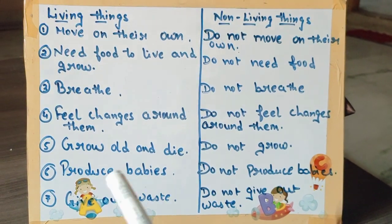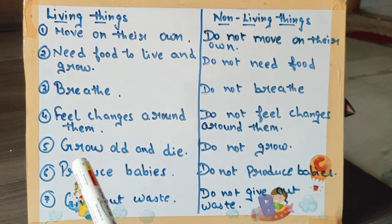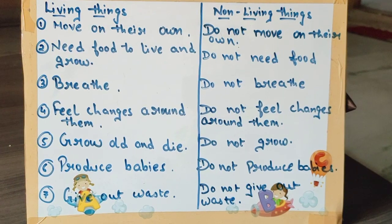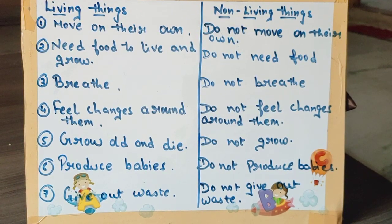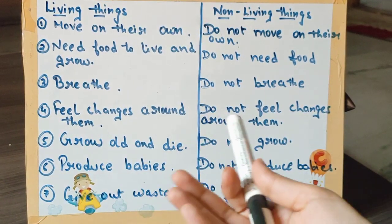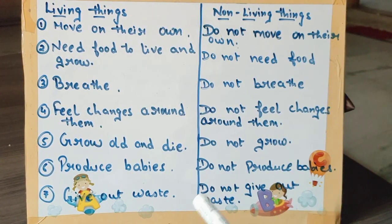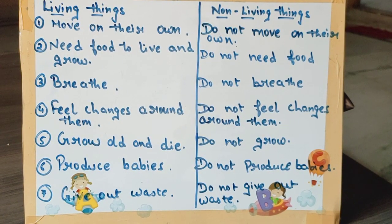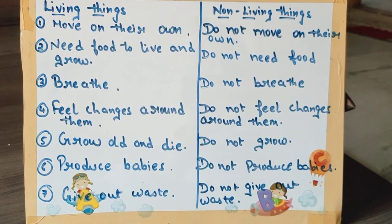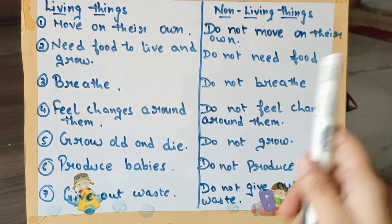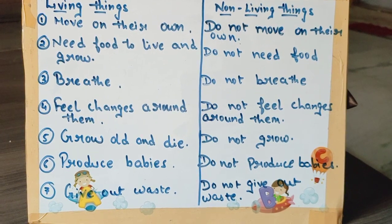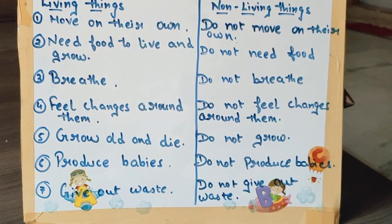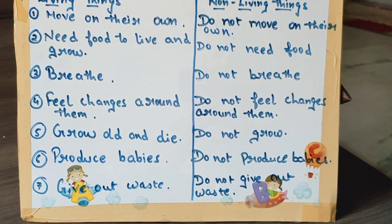Next point: living things grow old and die. A small baby grows to an adult, then becomes an old person, and then they die. This happens in living things only. But non-living things do not grow.